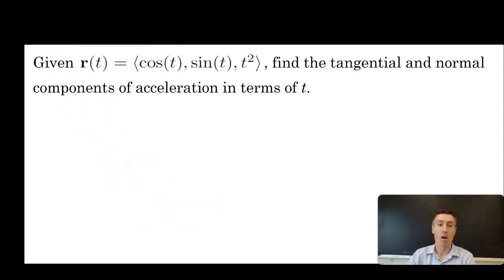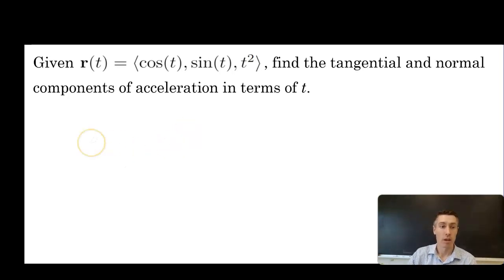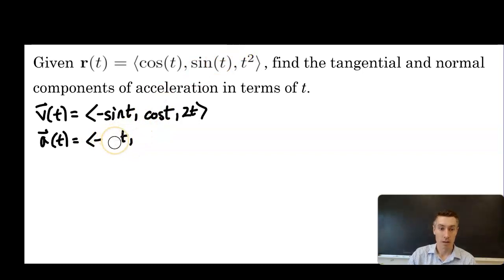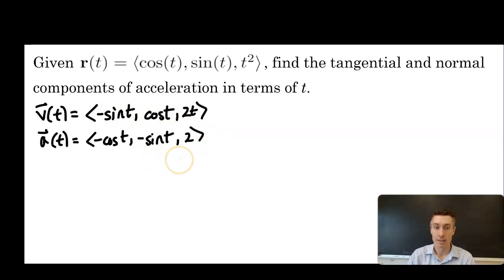Our last example: given r of t equaling ⟨cos t, sin t, t squared⟩, find the tangential and normal components of acceleration in terms of t. The challenge is they don't give us a value of t, so we'll have a more algebraic computation. Velocity is ⟨-sin t, cos t, 2t⟩ and acceleration is ⟨-cos t, -sin t, 2⟩.